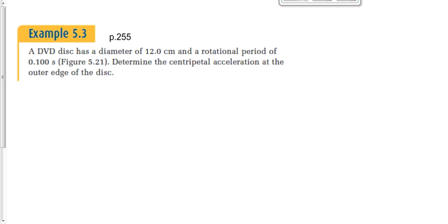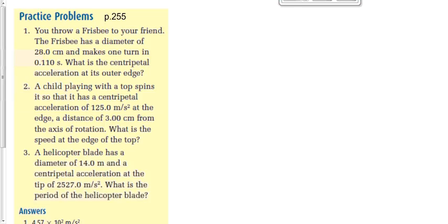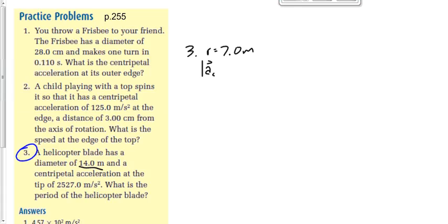Let's look at question number three on page 255. A helicopter blade has a diameter of 14 meters and a centripetal acceleration of 2527 meters per second squared. What's the period of the helicopter blade? First: this is diameter, so the radius is 7 meters, not 14 meters. The centripetal acceleration is 2527.0 m/s². We want to find the period, big T.